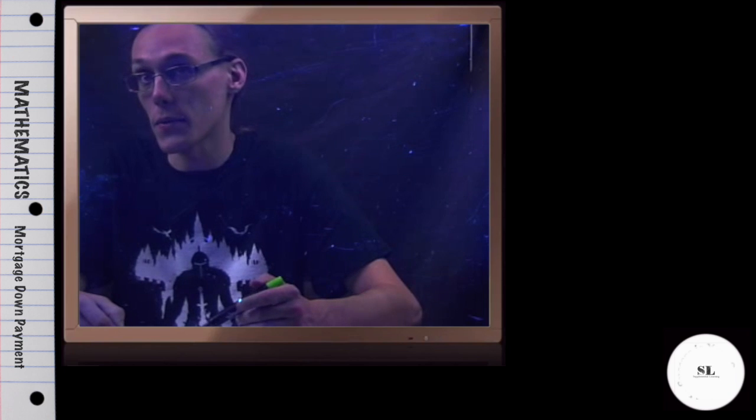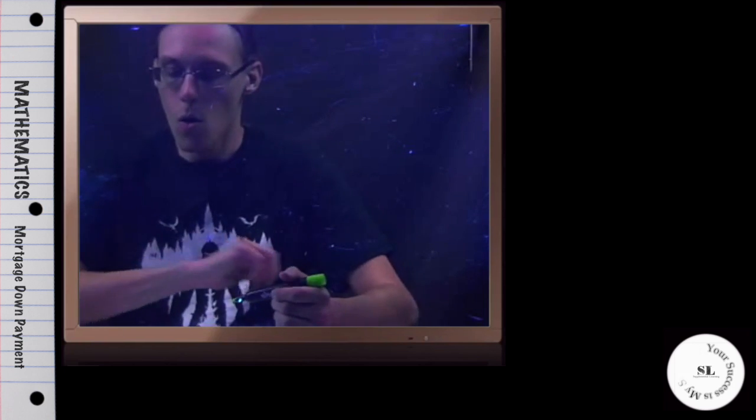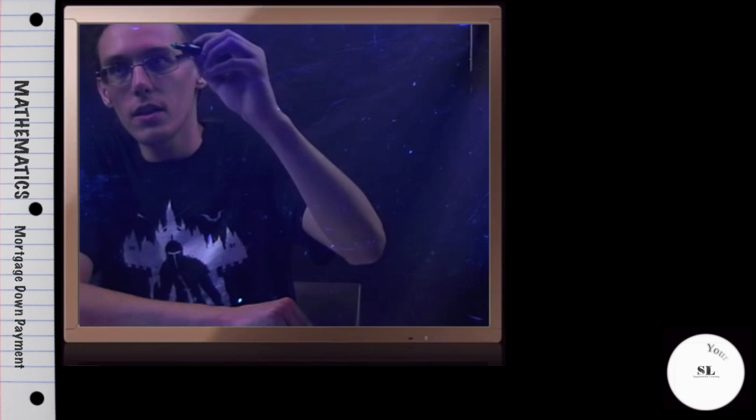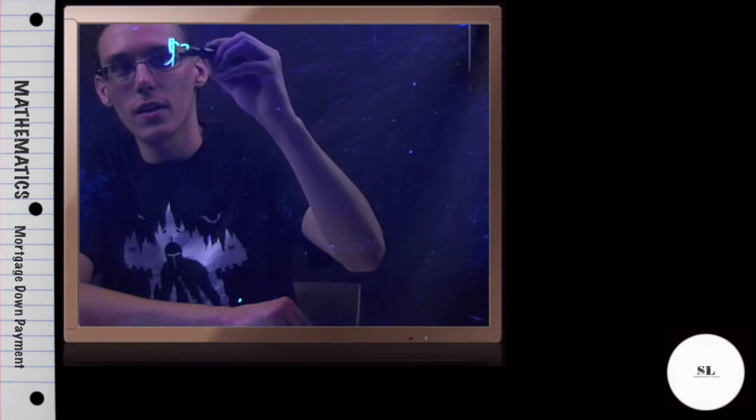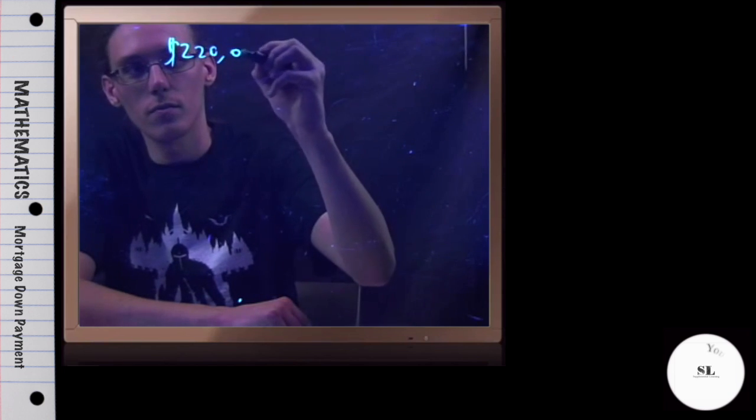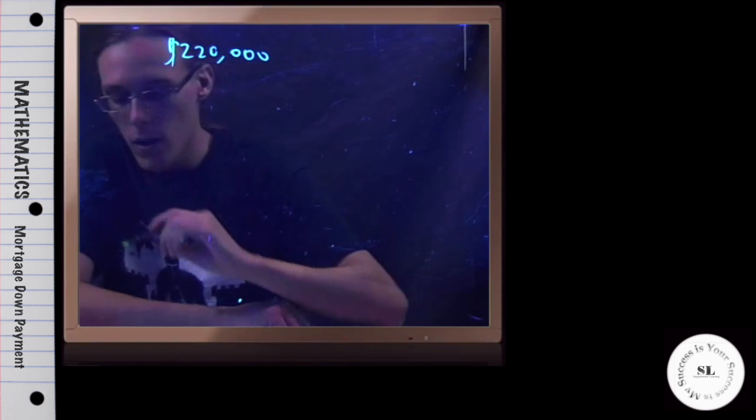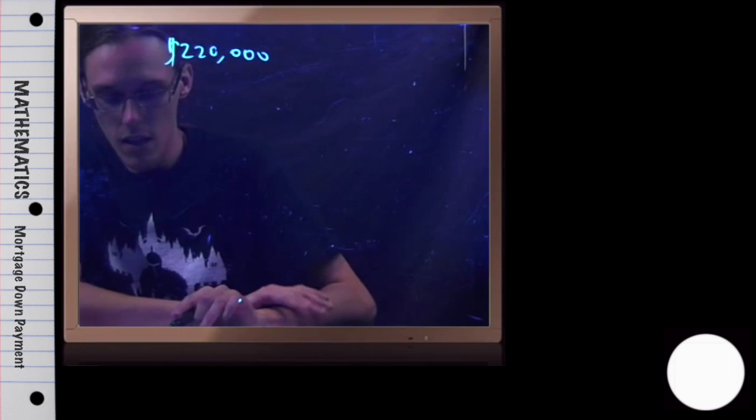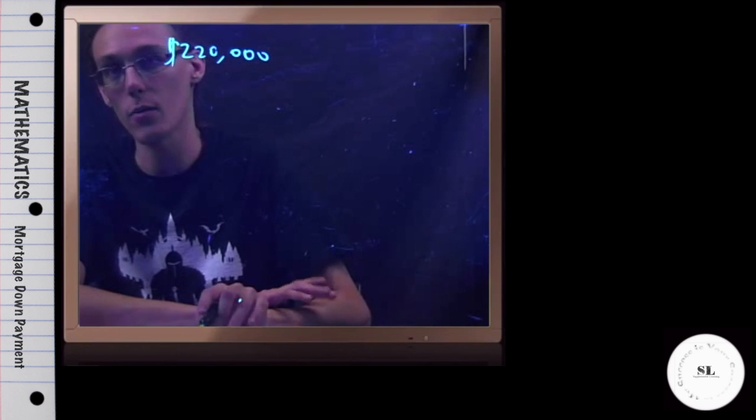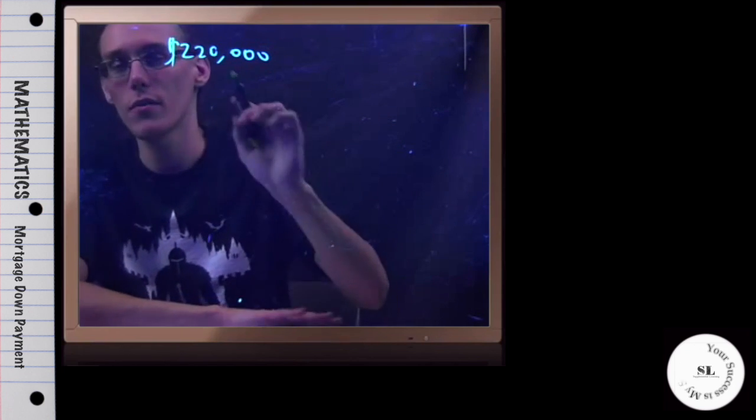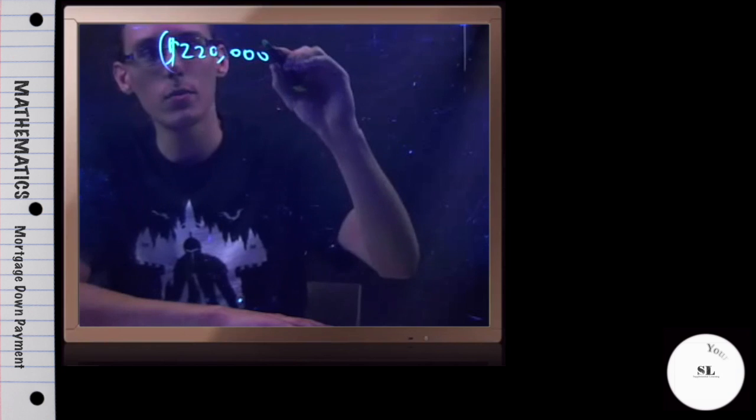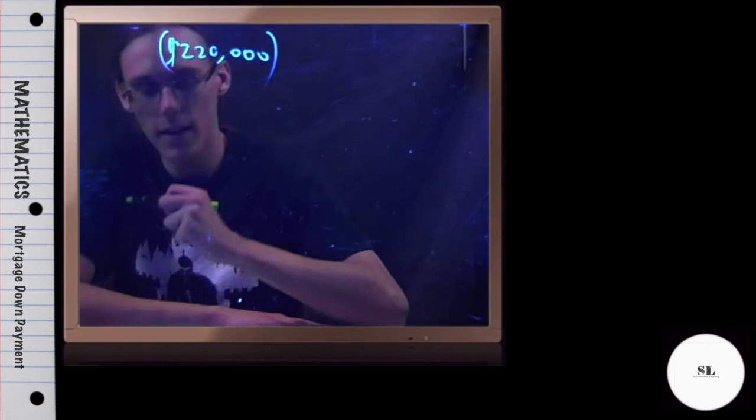find the required down payment. Well, we know that ultimately this house costs $220,000, and the required down payment - in the question description it explicitly says the bank requires a 20% down payment. So that means whatever the cost of the home is, we need to pay 20% of that right now.